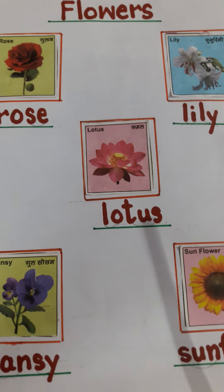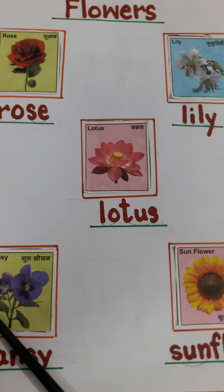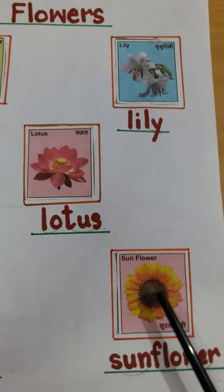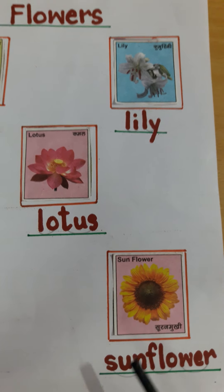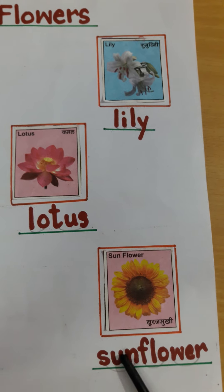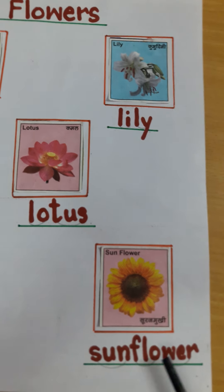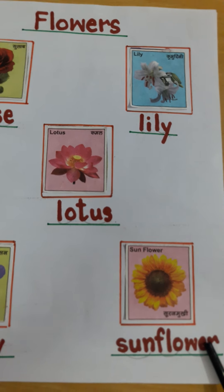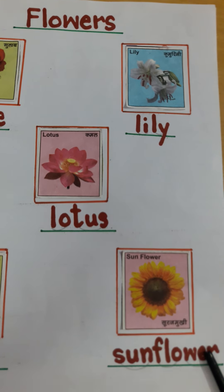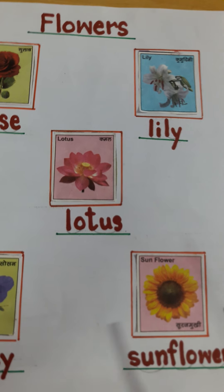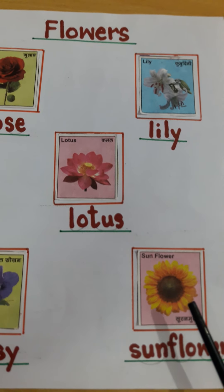Then last is Sunflower. S-U-N-F-L-O-W-E-R. Sunflower. Sunflower means kya hota hai? Suraj ki taraf mukhh karta hai. Bhi ek sundar flower hai.